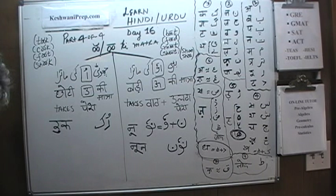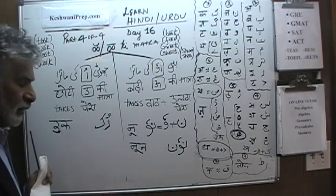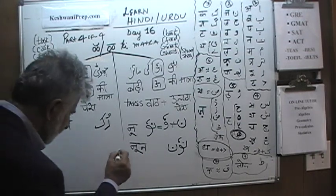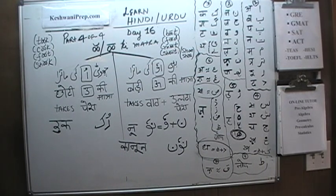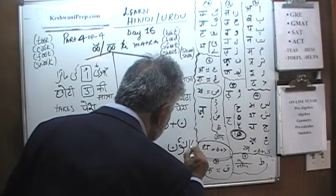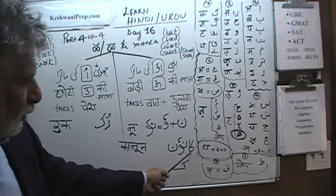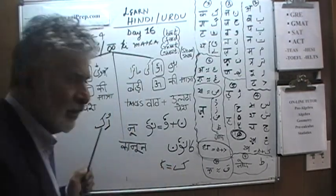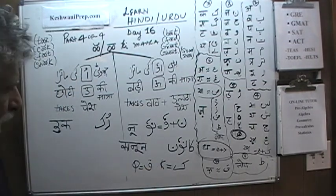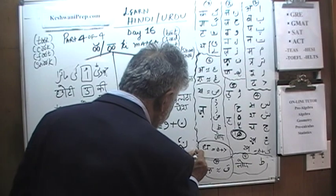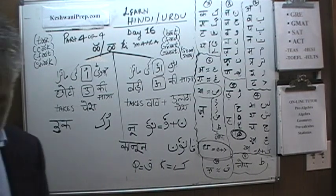Let's do one more word containing Badi Uki Matra. Let's write 'Kanun.' Pay attention — if you were to write Kanun with a Kaf in Urdu, that spelling would be wrong. Kanun in Urdu is not spelled with a K; it's spelled with a Q. So we fix it: Q, then Alif, then Nun. That's Kanun — it means law and order.